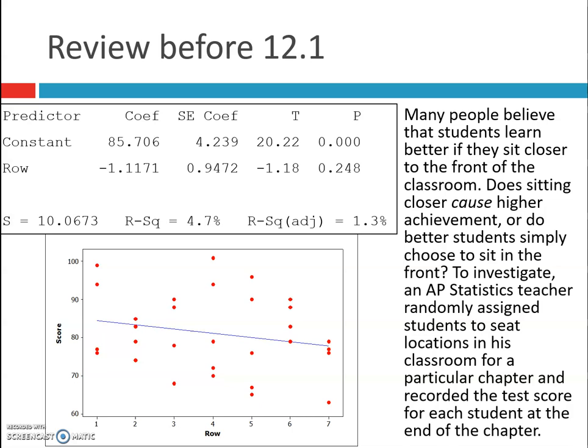To prepare us for this chapter, you have or had a review to do. The context had to do with where you sit in class and if that relates to how well you do on a test. You see the computer output for the data and a scatter plot of the data.